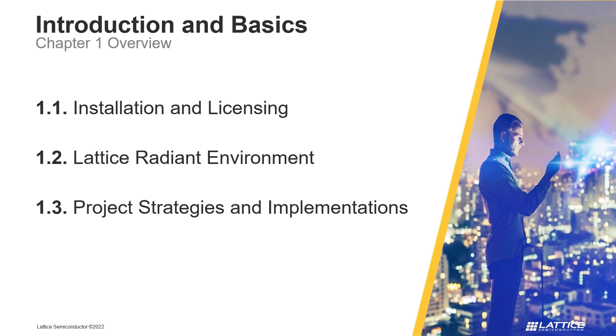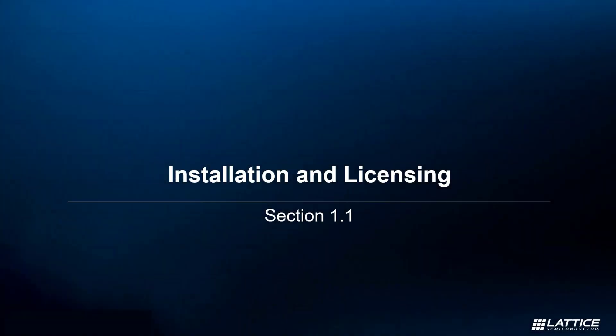Chapter 1, Section 1: Installation and Licensing. In this section of the video series, we will cover the process for downloading Radiant and how a license can be requested and set up. Some basic information about Radiant's license debugger tool will also be presented.